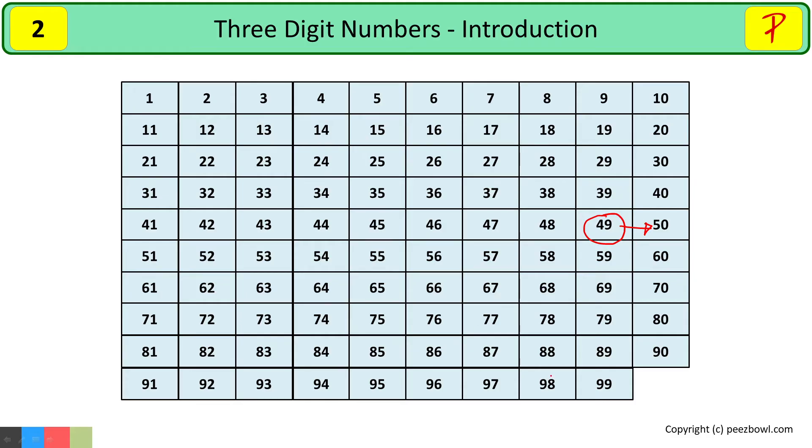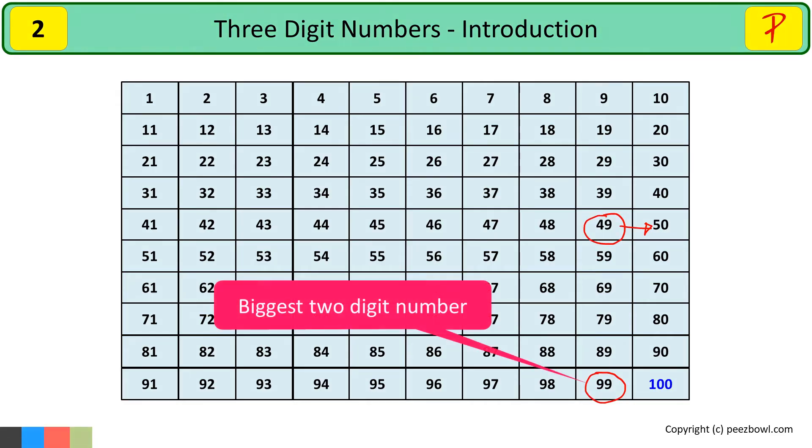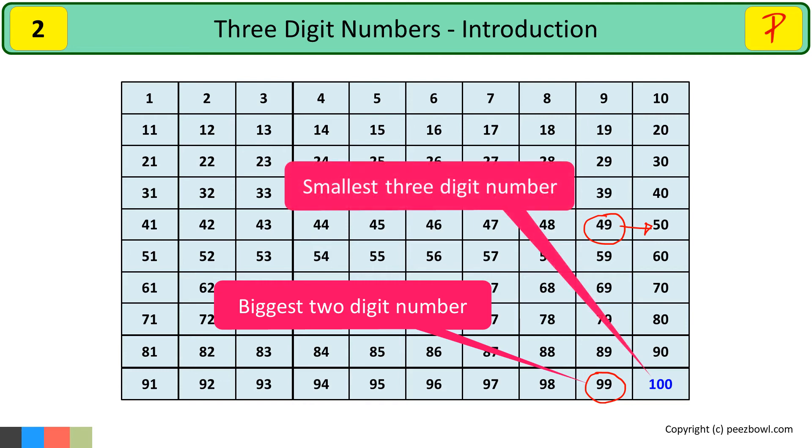We stopped at 99 here. Here also we need to add 1 to get the number after 99. So the number we get after 99 is 100. You also notice few things here that 99 is the biggest two digit number and 100 is the smallest three digit number.